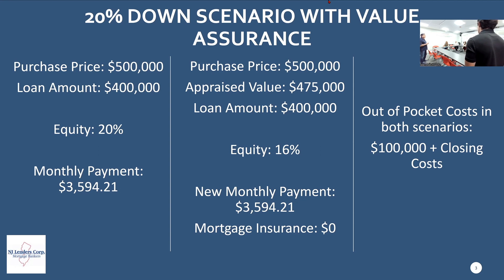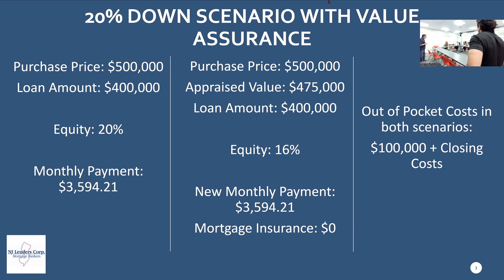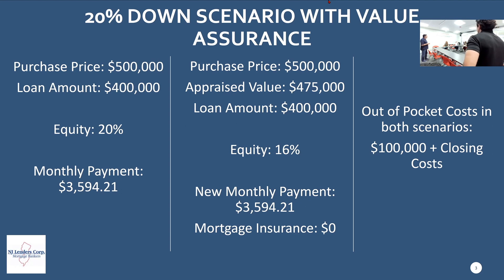When you submit an offer with value assurance, your pre-approval letter states that NJ Lenders is certifying the value. We still have to appraise the home — we're not waiving the right to an appraisal. We just take the hit if it doesn't come in. When you present the offer, include a letter about the strength of your buyer. Say, hey, they have value assurance — can we set up a call with my lender to discuss this further? That way the lender can explain it to the listing agent.